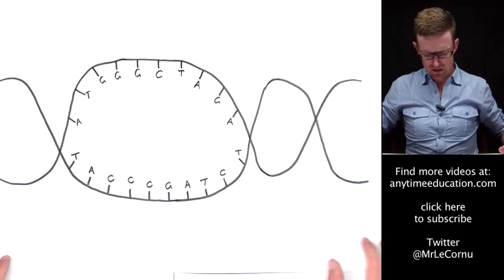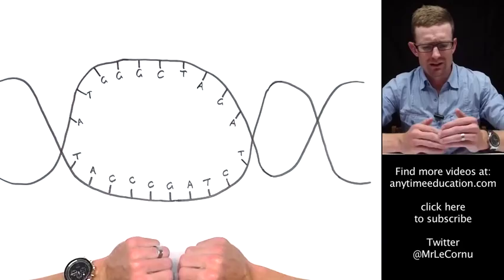So let's have a look at how we actually get our RNA message produced from the DNA sequence. I've got a diagram here of a double helix where part of the double helix has unwound and the strands have separated.